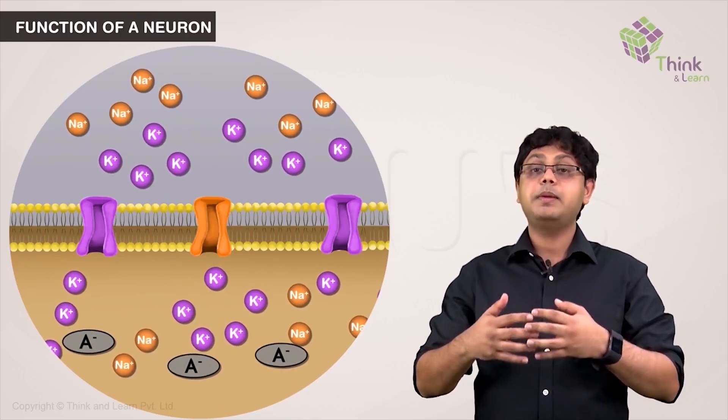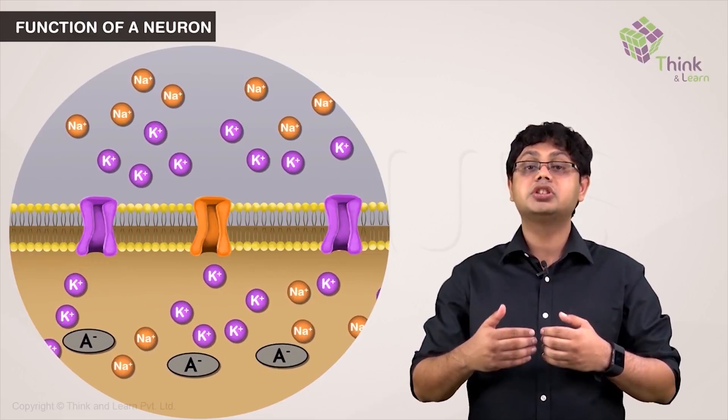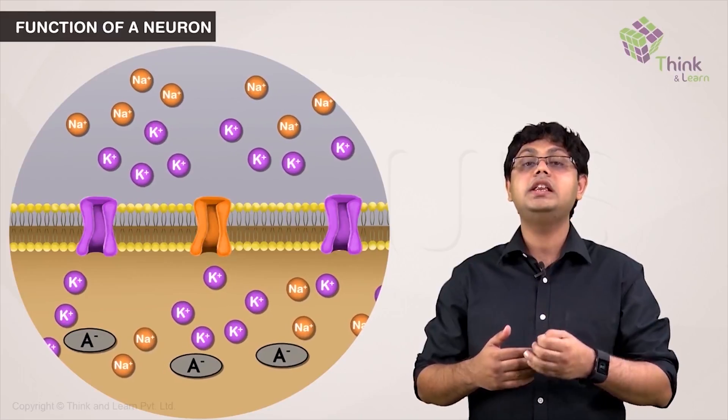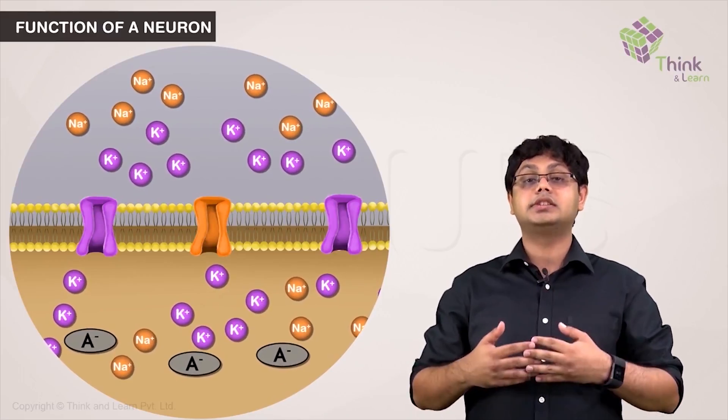But after some time, the K-plus diffusion stops because the diffusion gradient of K-plus is overcome by the electrical pull of the highly negative charge inside the cells.